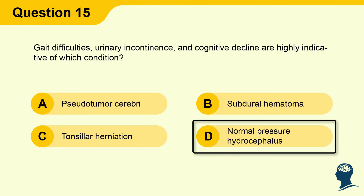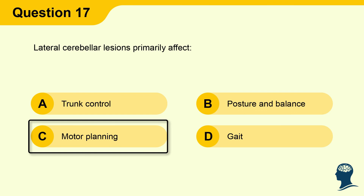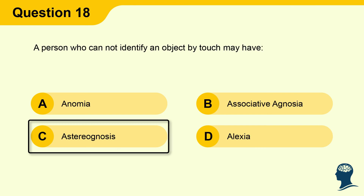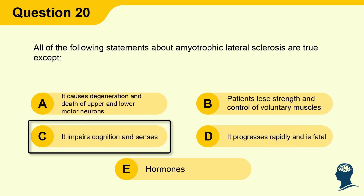Question 15: Gait difficulties, urinary incontinence, and cognitive decline — answer D, Normal pressure hydrocephalus. Question 16: Cerebellar pathways affect all but D, Anosmia. Question 17: Lateral cerebellar lesions primarily affect C, Motor planning. Question 18: Cannot identify an object by touch — answer C, Astereognosis. Question 19: Right MCA stroke in the distribution of the inferior division will most likely cause D, Left hemi-neglect, decreased voluntary movements, and relatively normal left-sided strength. Question 20 answer: C, It impairs cognition and senses.